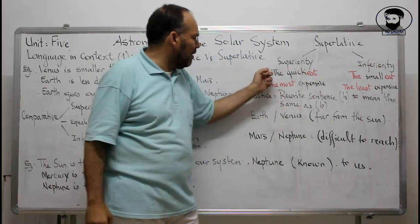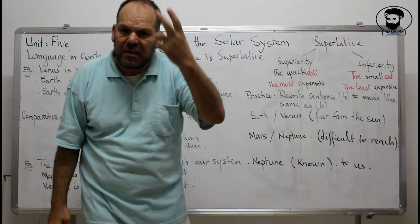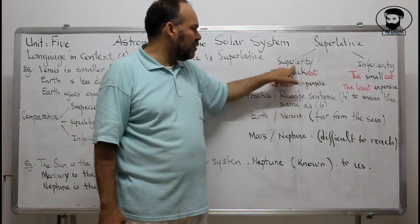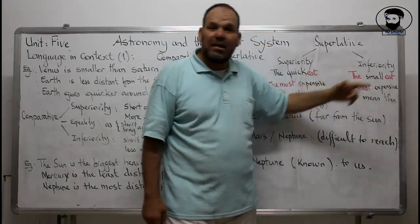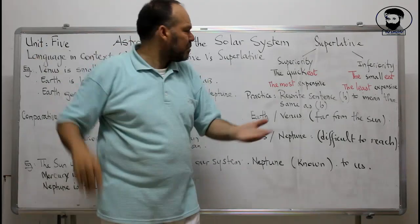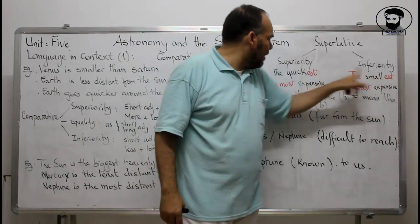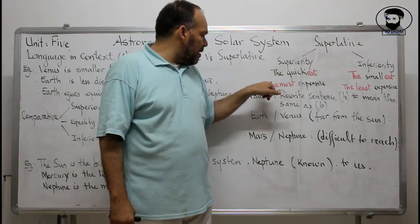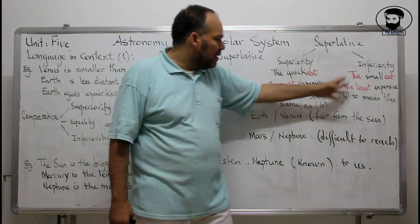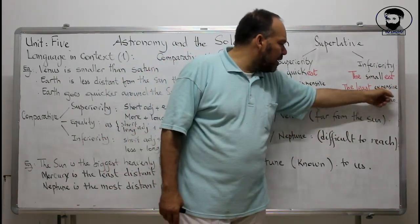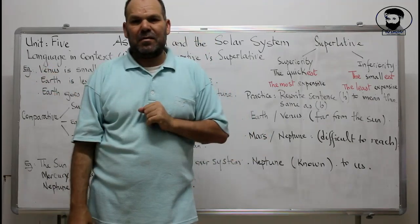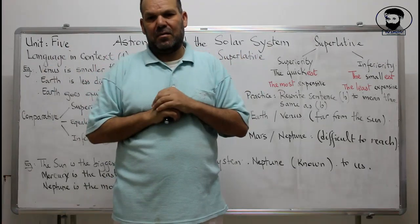For superiority in the superlative, the adjective must be positive. 'Quick' is a short adjective, so we say 'the quickest.' For inferiority, we use 'the smallest' — small being a negative or inferior quality compared to tall. For long adjectives: 'the most expensive' for superiority, and 'the least expensive' for inferiority. For example, comparing a bicycle, a car, and a plane: the bicycle is the least expensive, and the plane is the most expensive.